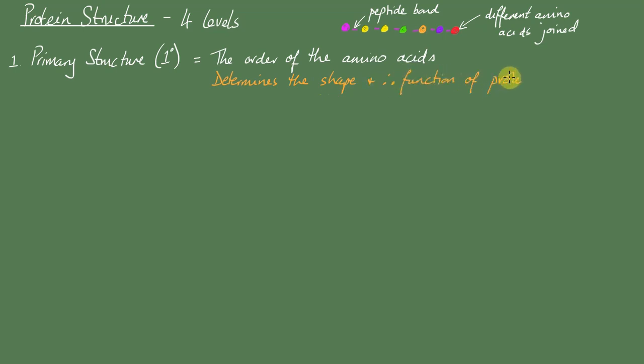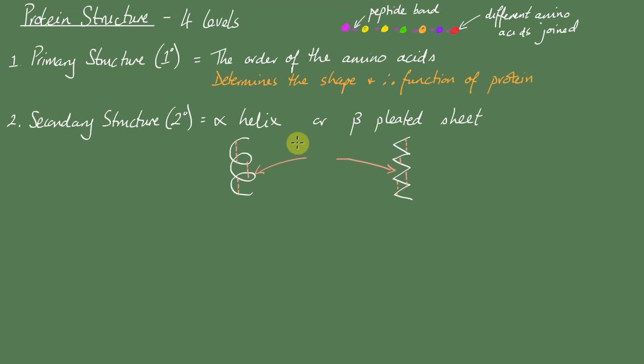The secondary structure is where this line of amino acids spontaneously forms these regions of either alpha helices or beta pleated sheets. And these shapes are stabilized by hydrogen bonds which occur as a result of the slightly negative oxygen on one side of the peptide bond and the slightly positive hydrogen on the other side of the peptide bond.